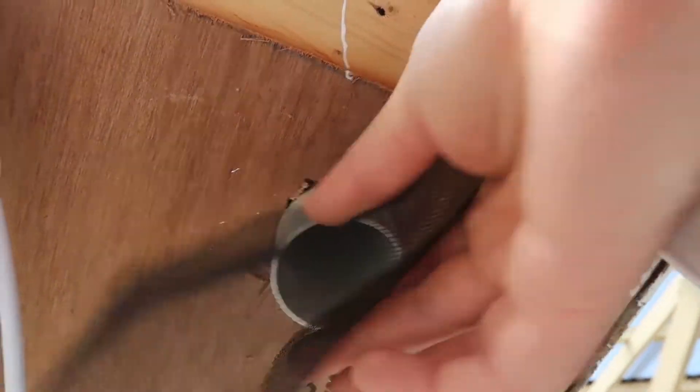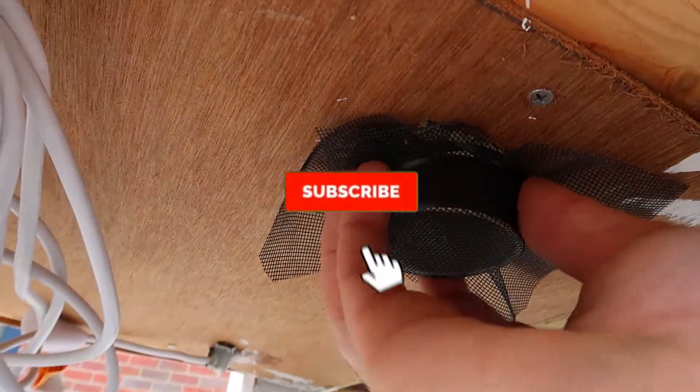Now for the intake on that tube that I installed last time, I'm going to use this type of mesh, which I'm going to tape over the bottom of that intake. That way it'll stop any bugs or things flying up into it. Hopefully a little bit of dust as well. Now we can move on to the air pump.